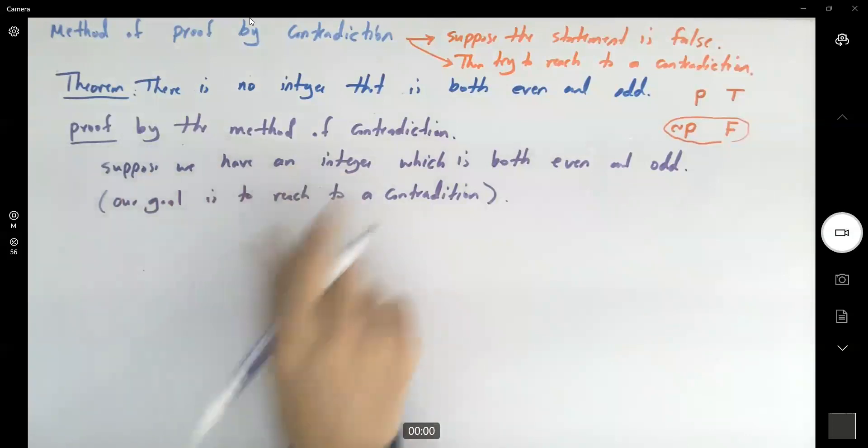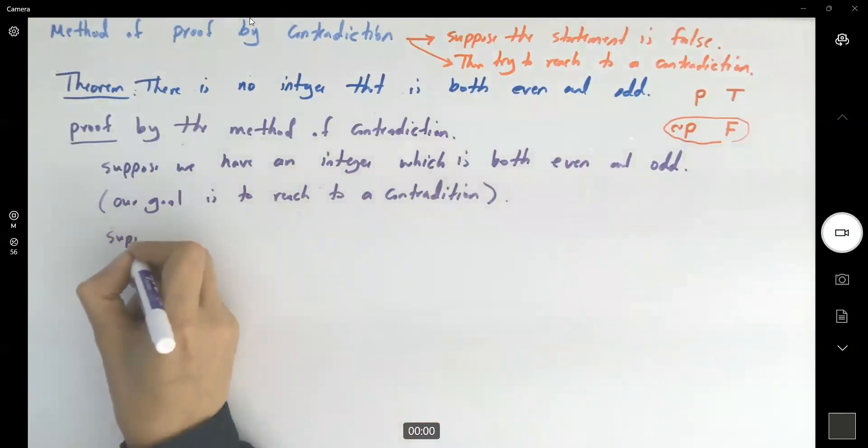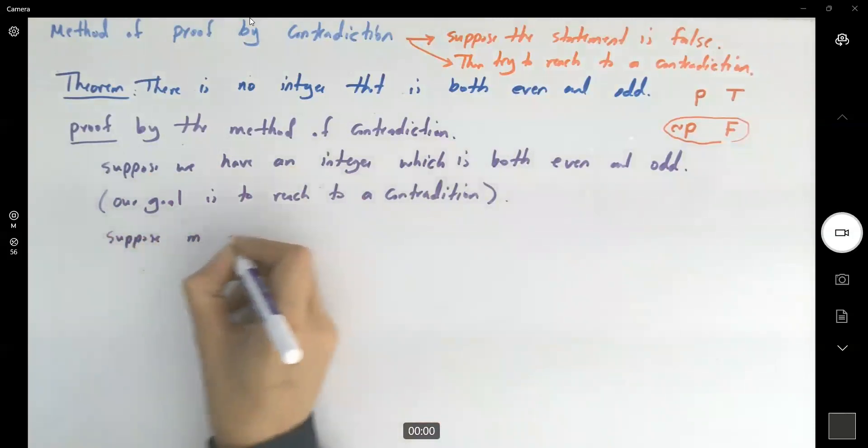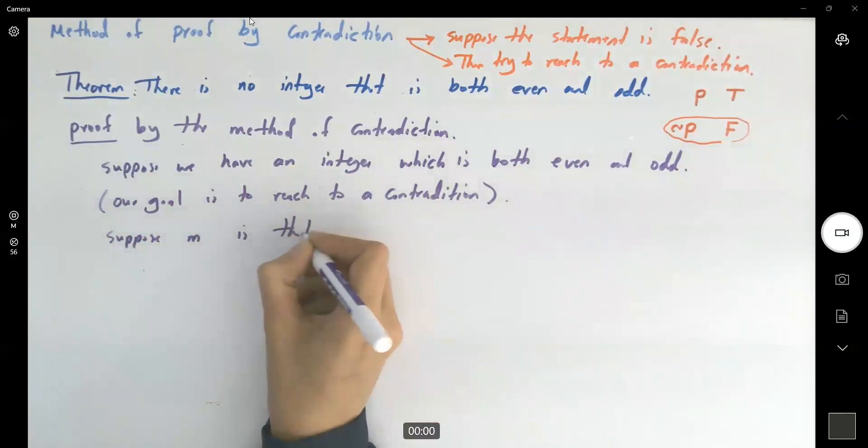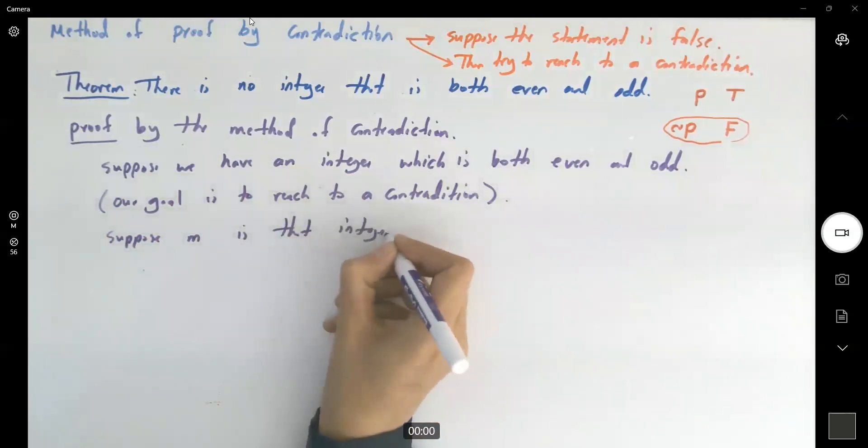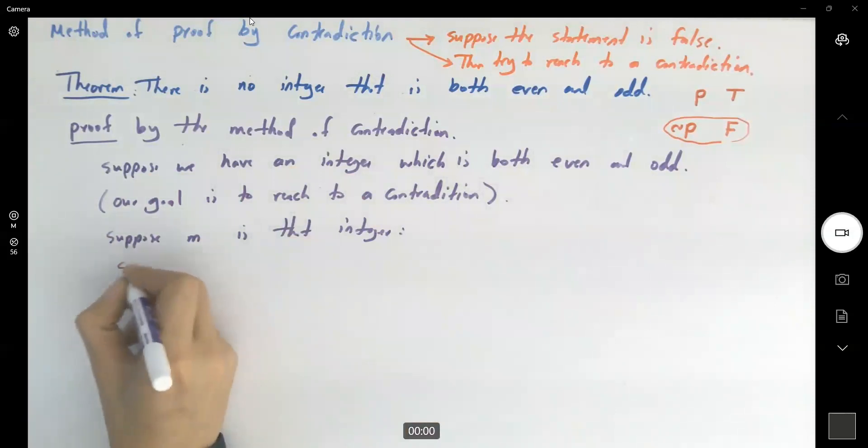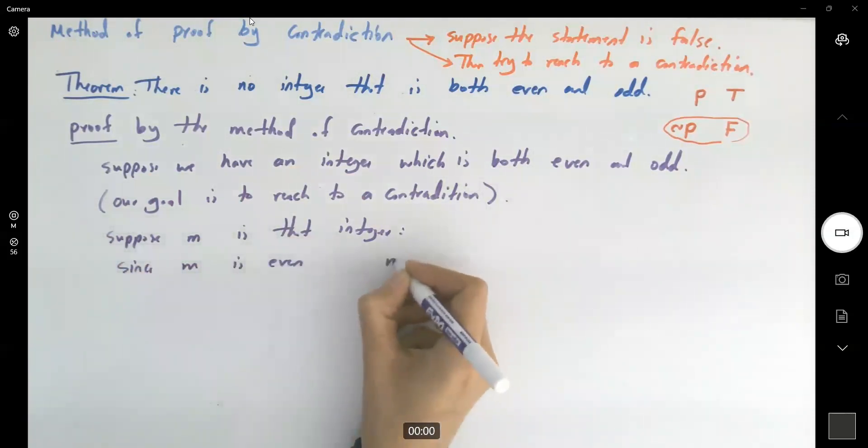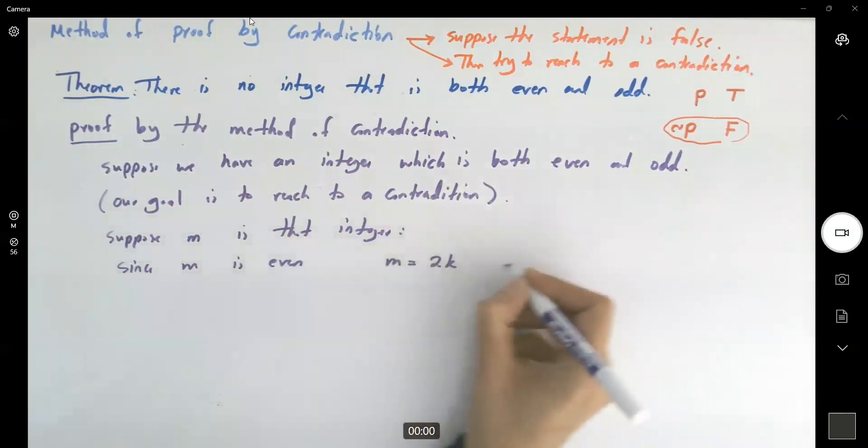So we have an integer which is both even and odd. Suppose M is that integer. Since M is even, M can be written as 2K for some integer K.